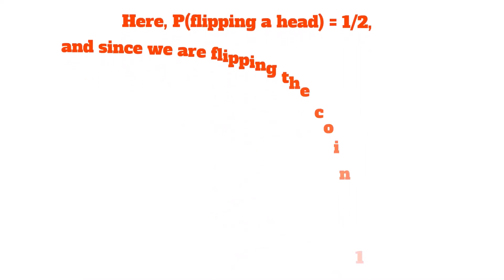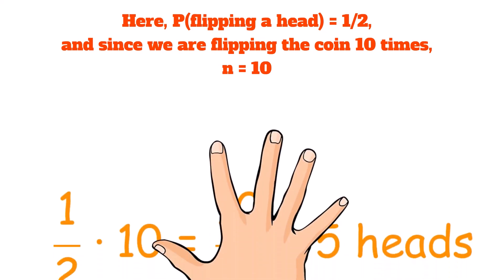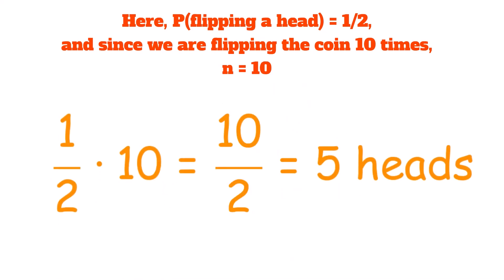Here, the probability of flipping a head is equal to 1/2. And since we are flipping the coin 10 times, n is equal to 10. Applying our formula that we just learned, we get that 1/2 times 10 is equal to 10 divided by 2, which is equal to 5, so we can expect to get 5 heads if we flip a coin 10 times.